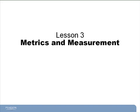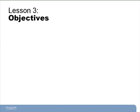Lesson three is a short lesson on metrics and measurement, and it contains two main objectives. First, we're going to learn what we measure in CSI, and then we'll talk about why exactly we measure things in CSI.